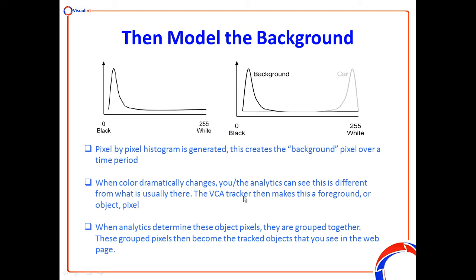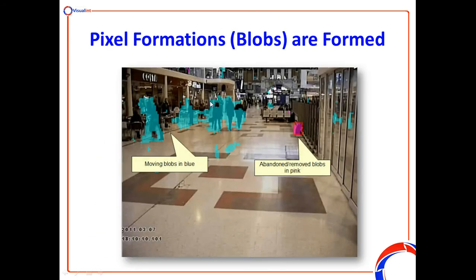The camera is basically understanding the difference between the background and the foreground of the image it's looking at. The algorithm creates a histogram of the background pixels of the image and understands the background, so that when new objects appear that require the analytics to track, they can clearly be seen as foreground objects, which can then be separated and tracked. You can see here that these people and indeed that bag are deemed foreground objects, or blobs in this context, separated from the background — and that's how we can track them, follow them, count them, and do useful things.